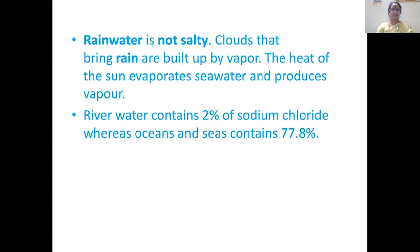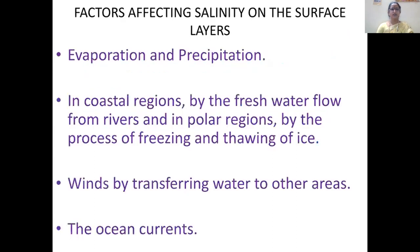The factors affecting salinity on surface layers are: first, evaporation and precipitation; second, in coastal regions by fresh water flow from rivers; third, in polar regions by the process of freezing and thawing of ice; and fourth, winds by transferring water to other areas; and ocean currents. These four are the important factors affecting salinity on the surface layers of the ocean.